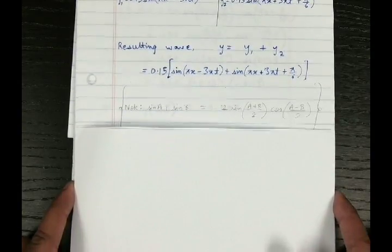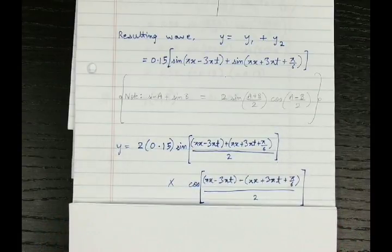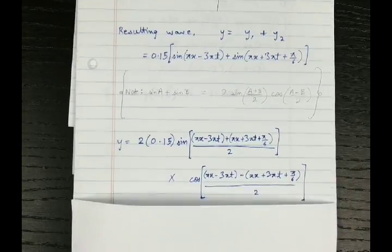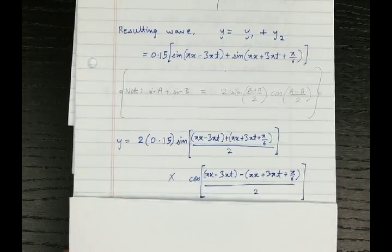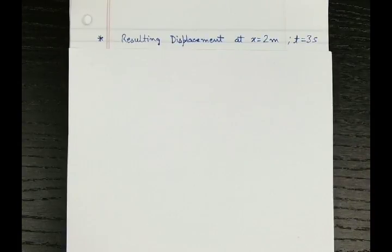Applying the sine addition formula gives the final expression for the resultant wave y: 0.3 sin(pi·x + pi/12) · cos(3pi·t + pi/12). We will now use this resultant displacement equation to find the value of y at a given position and time.